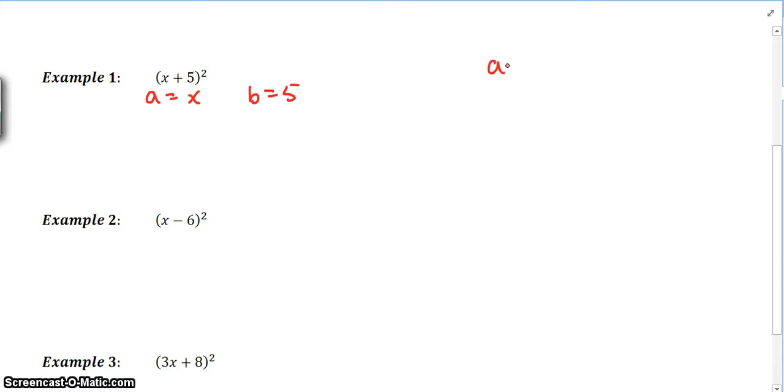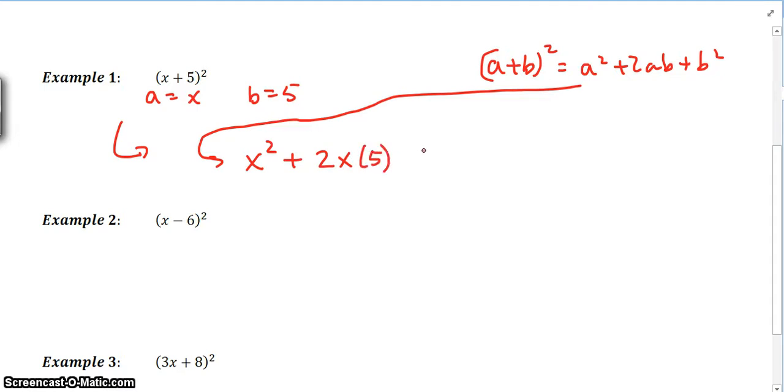We remember that a plus b squared, the rule for that, becomes a squared plus 2ab plus b squared. Without even having to expand this, we can write this as x squared plus 2x times 5 plus 5 squared. That's the same as saying x squared plus 10x plus 25.